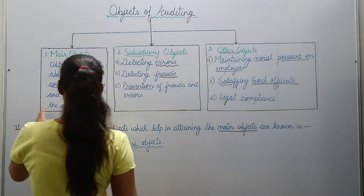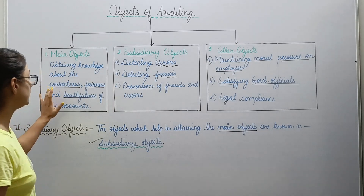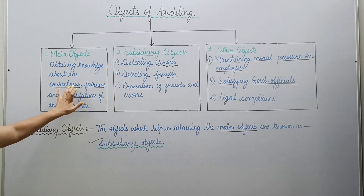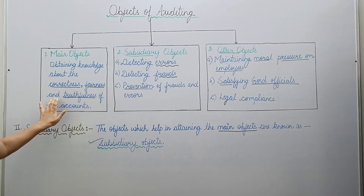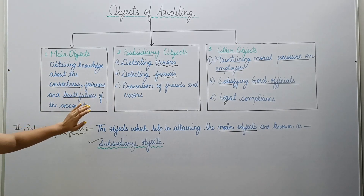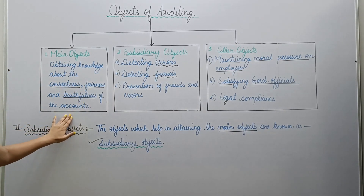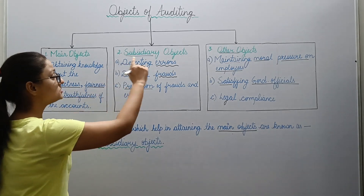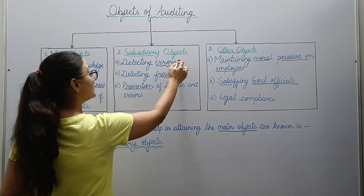So the main objective is that you check and gain knowledge about the correctness, fairness and truthfulness of your accounts. Now we will discuss the subsidiary objectives, starting with detecting errors.